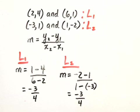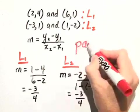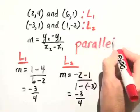In this case, the slopes of the two lines are the same, so we can say that the two lines are parallel.